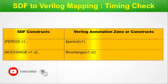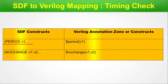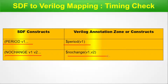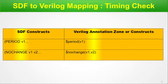Completing the timing check mapping table: PERIOD maps to the $period Verilog system task, and NOCHANGE maps to $nochange. This completes the straightforward timing check mapping where each SDF construct maps directly to its corresponding Verilog system function or task.